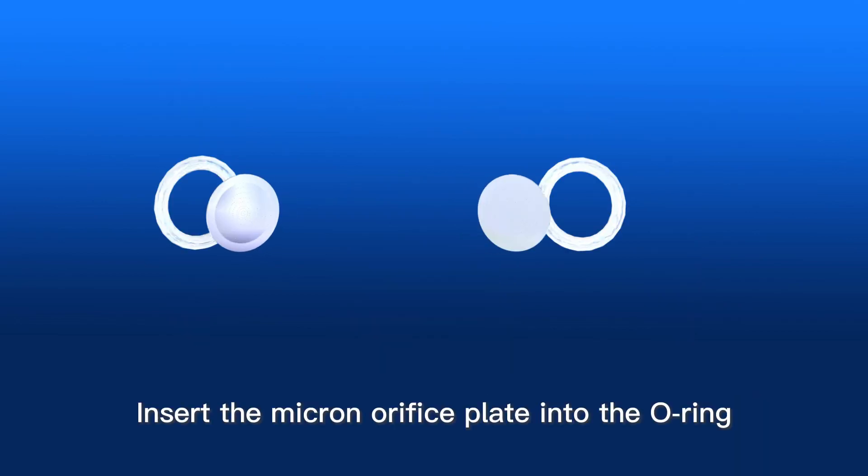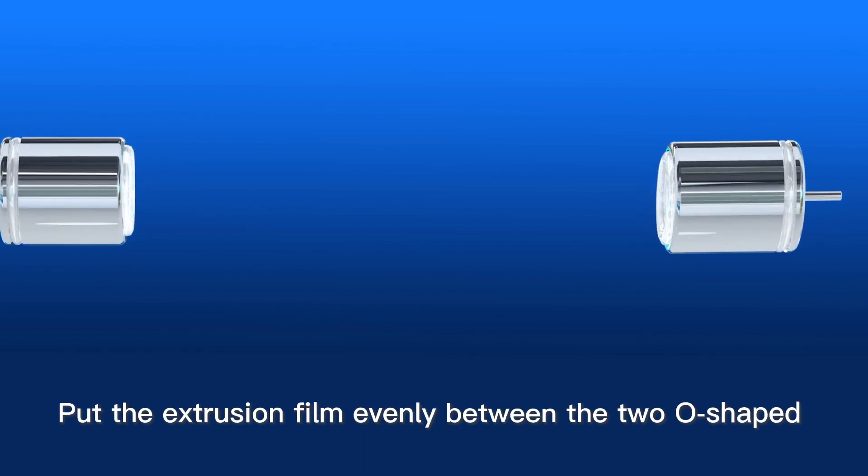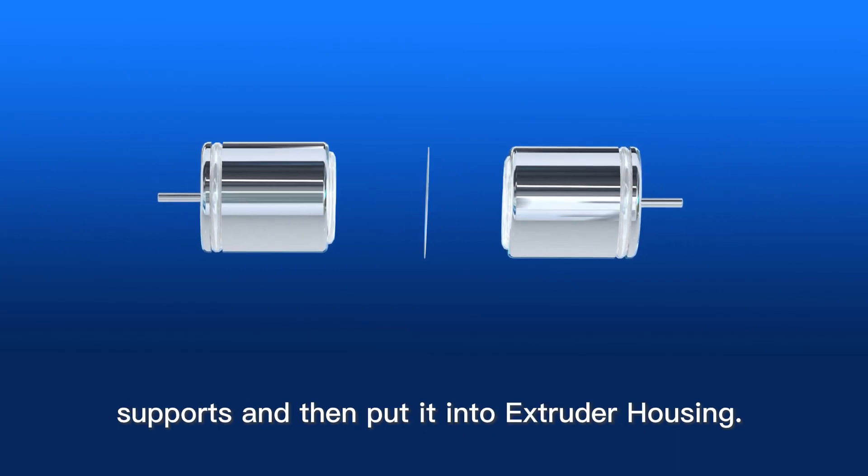Insert the micron orifice plate into the O-ring. Place the dark side upward into the groove of the O-ring bracket. Put the extrusion film evenly between the two O-shaped supports and then put it into extruder housing.